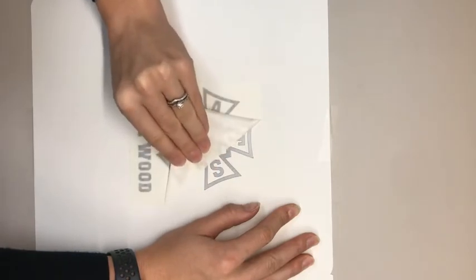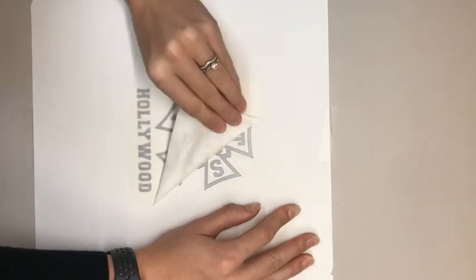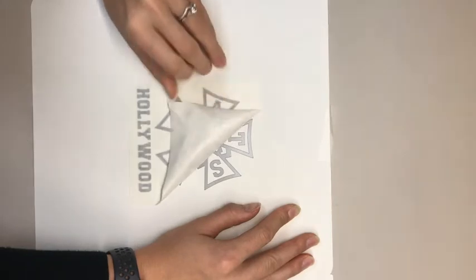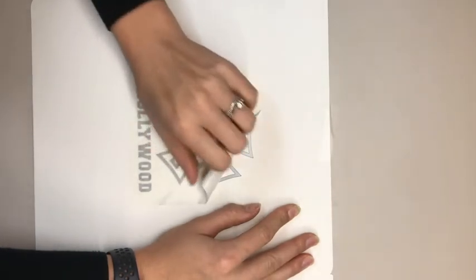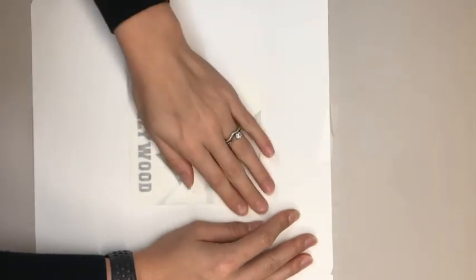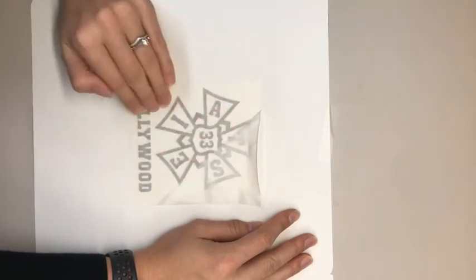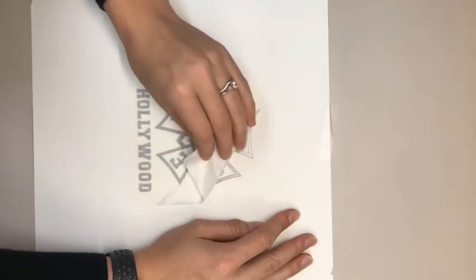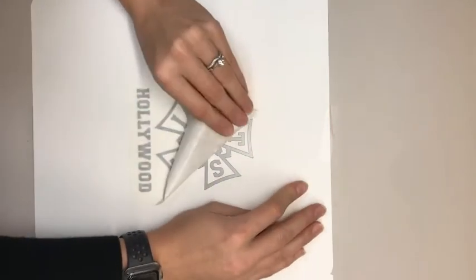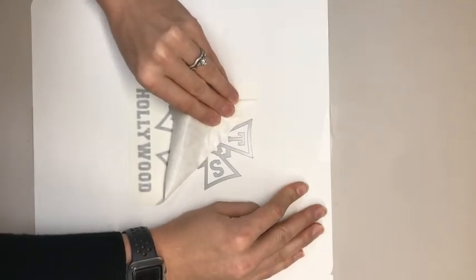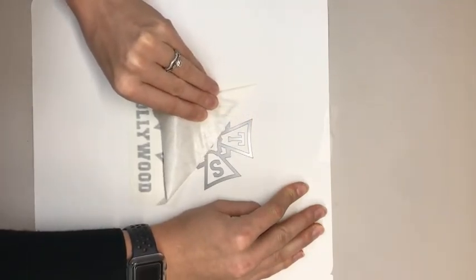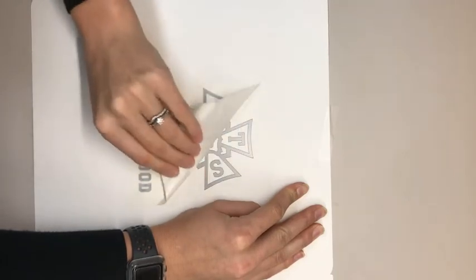If the vinyl cut does pull up while you are pulling the pre-mask off you can always go back and push it down or put the pre-mask back over it, maybe put a little bit more squeegeeing on it, and let it sit a little bit longer. It just means the adhesive hasn't bonded to it as well. So let's get this pulled off here.